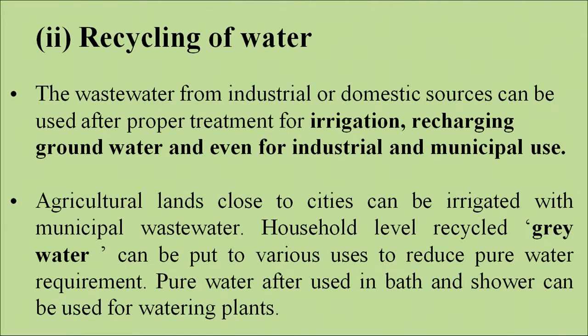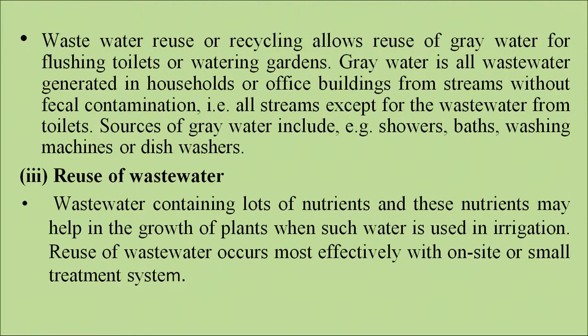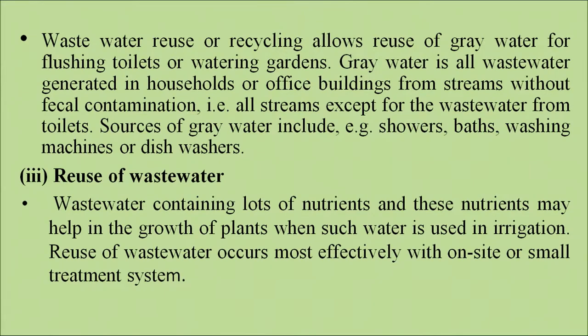Next is recycling of water. Wastewater from industrial or domestic sources can be used after proper treatment for irrigation, recharging the groundwater, and even for industrial and municipal use. Agricultural lands close to cities can be irrigated with municipal wastewater. Household-level recycled grey water can be put to various uses to reduce pure water requirement — water from bath and shower can be used for watering plants. Grey water is all wastewater generated in households or office buildings from streams without fecal contamination. Sources of grey water include showers, baths, washing machines and dishwashers.